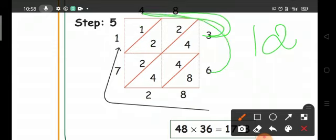Then 4 times 6 equals 24, write 2 and 4. Then 8 times 6 equals 48, write 4 and 8.